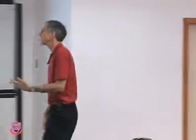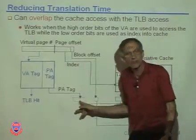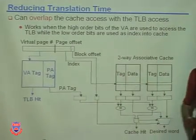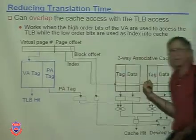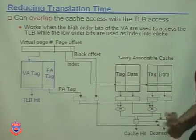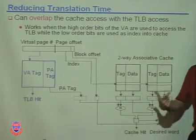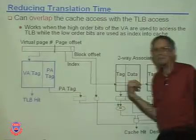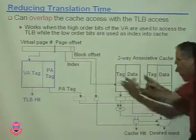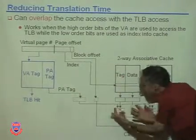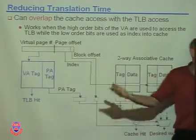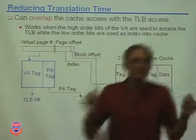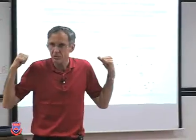The TLB is small and fast; the cache is bigger and slower. So by the time the physical page number arrives from the TLB, the cache has already fetched the potential data and is waiting at the comparator. That's how it works — a very clever parallel approach.